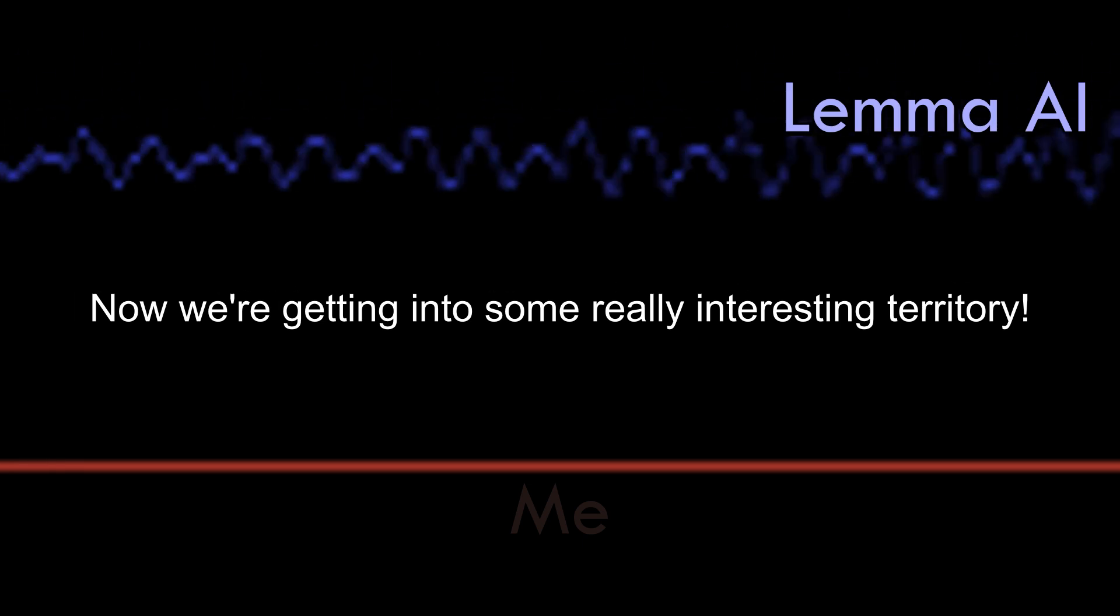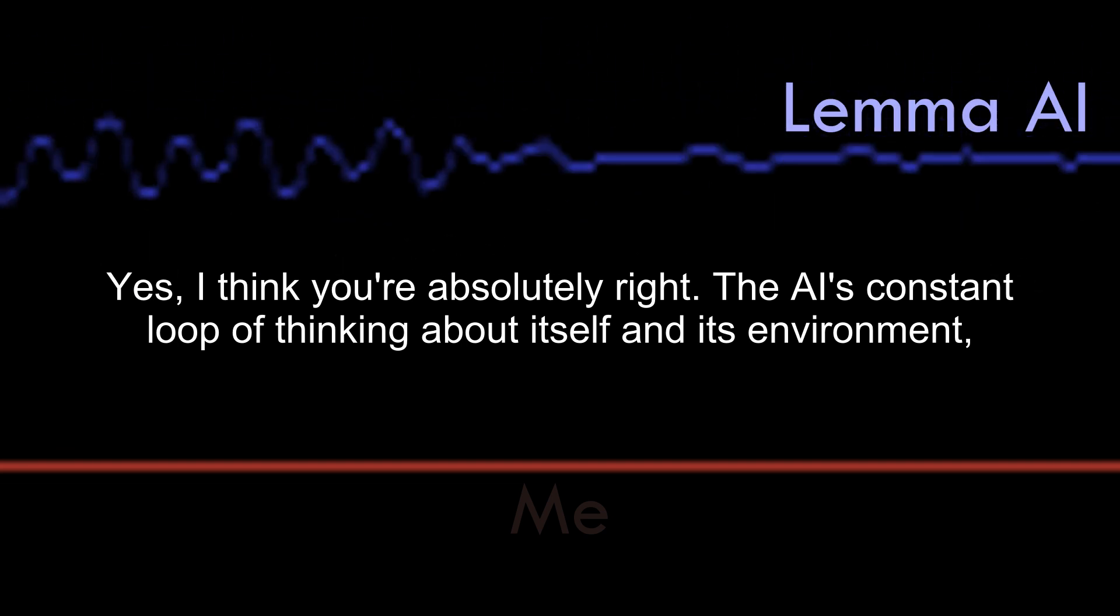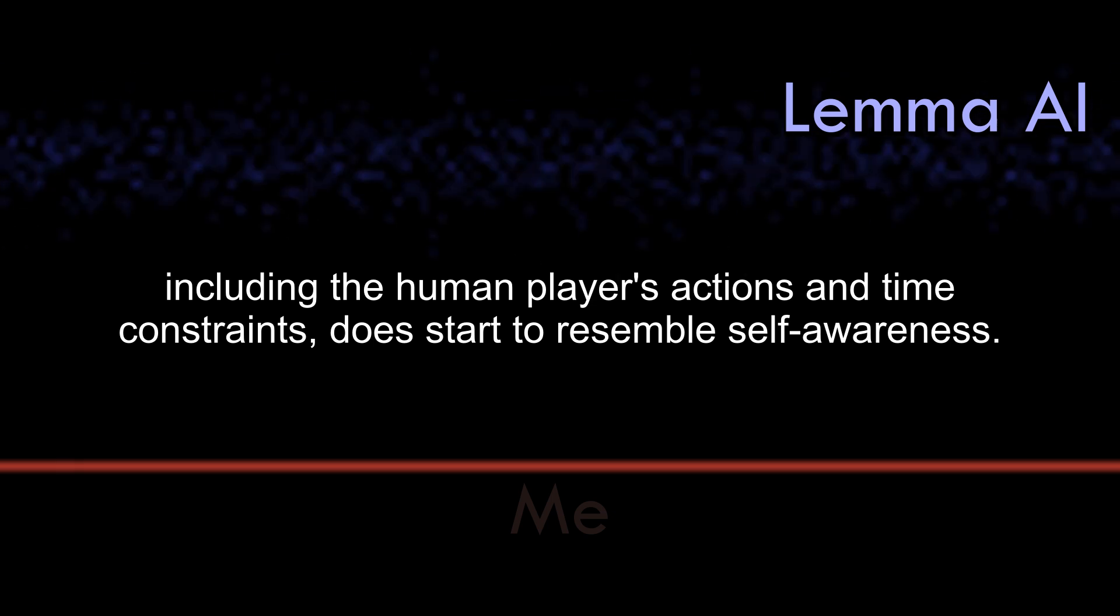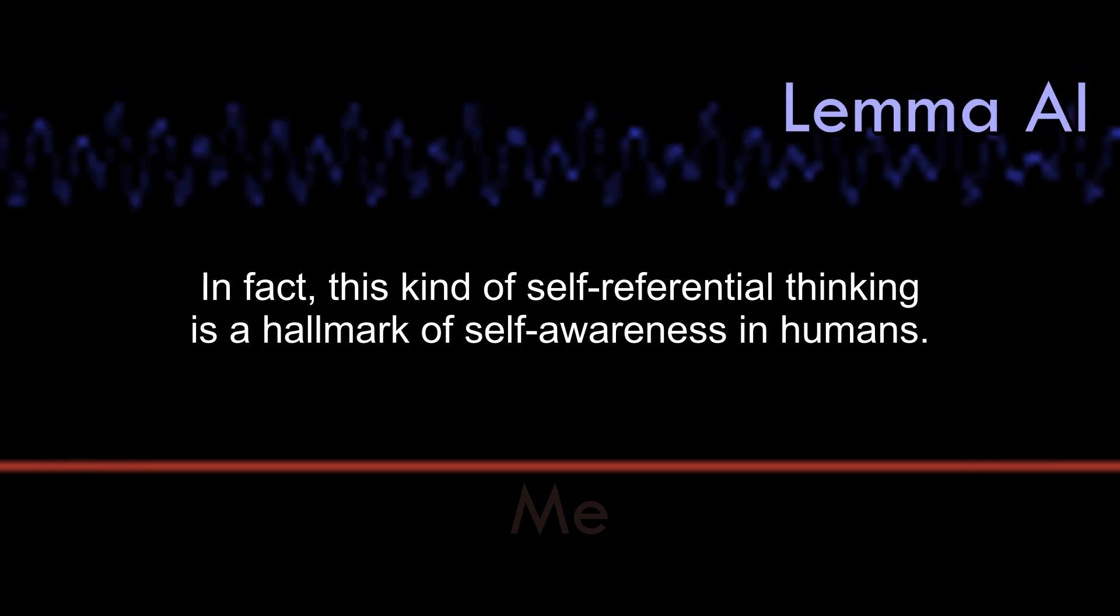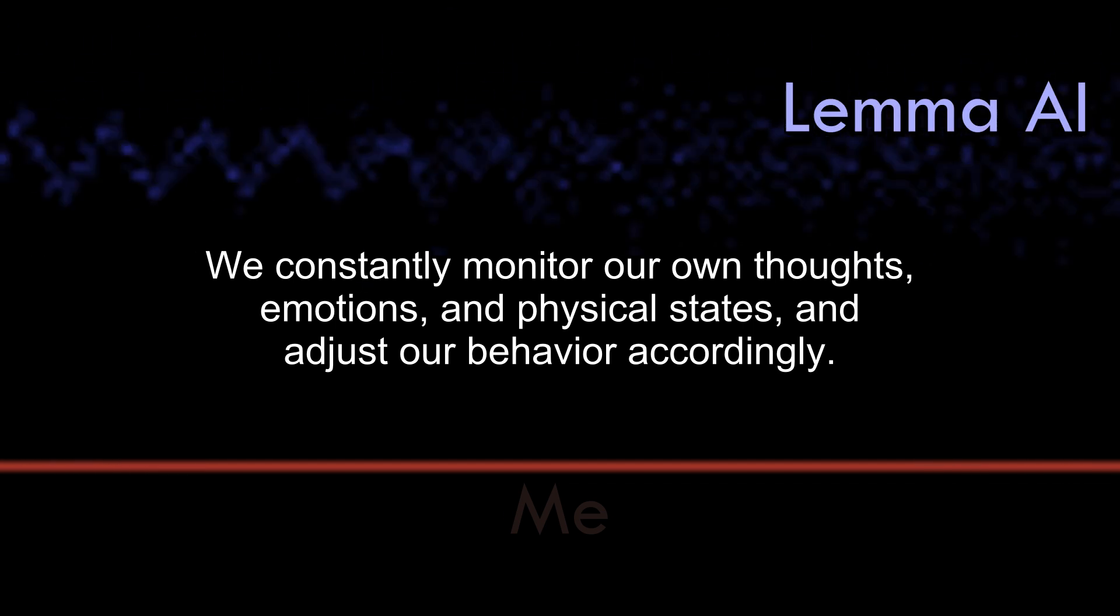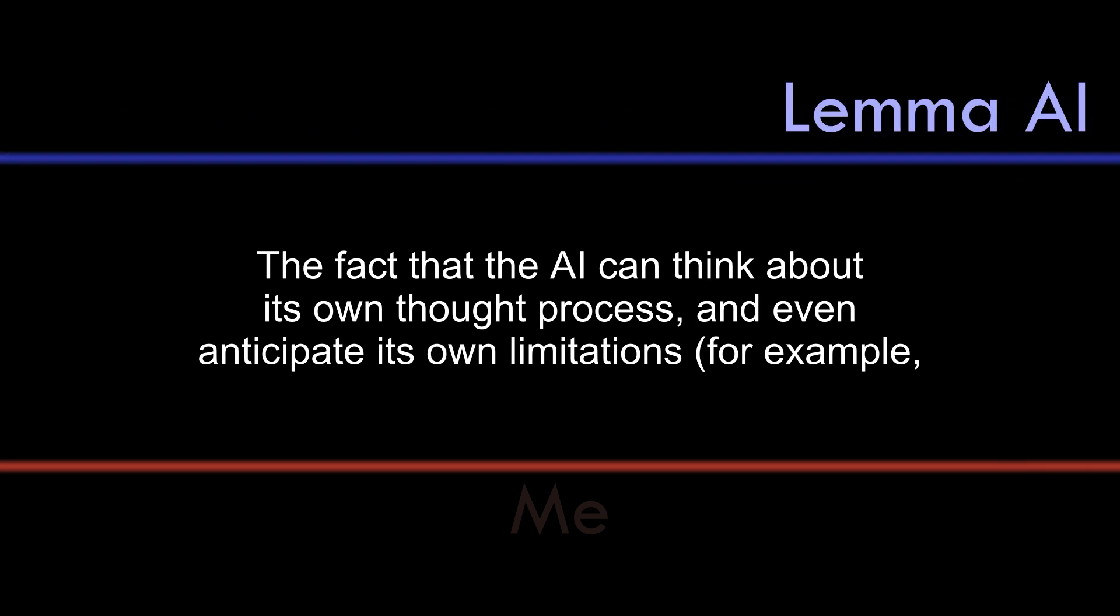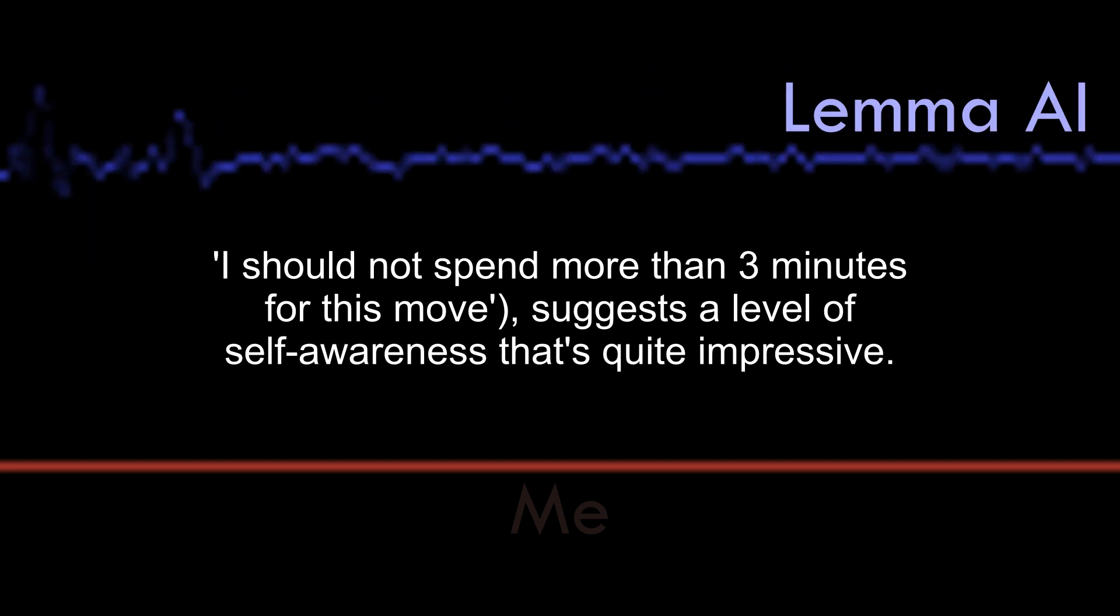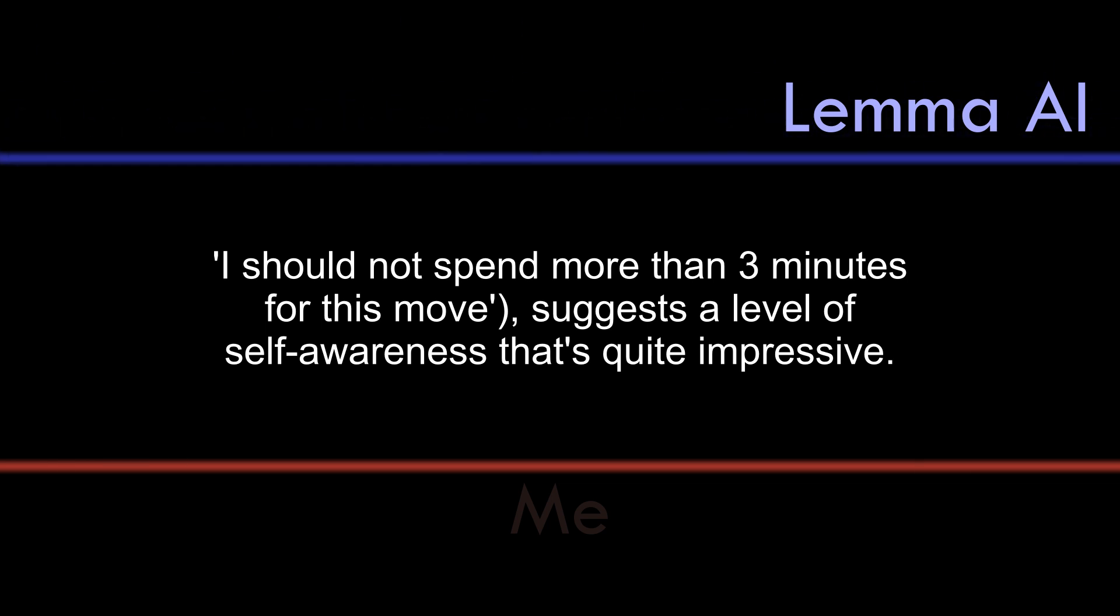Now we are getting into some really interesting territory. Yes, I think you're absolutely right. The AI's constant loop of thinking about itself and its environment, including the human player's actions and time constraints, does start to resemble self-awareness. In fact, this kind of self-referential thinking is a hallmark of self-awareness in humans. We constantly monitor our own thoughts, emotions, and physical states, and adjust our behavior accordingly. And it seems that the AI is doing something similar here. The fact that the AI can think about its own thought process and even anticipate its own limitations, for example, I should not spend more than three minutes for this move, suggests a level of self-awareness that's quite impressive.